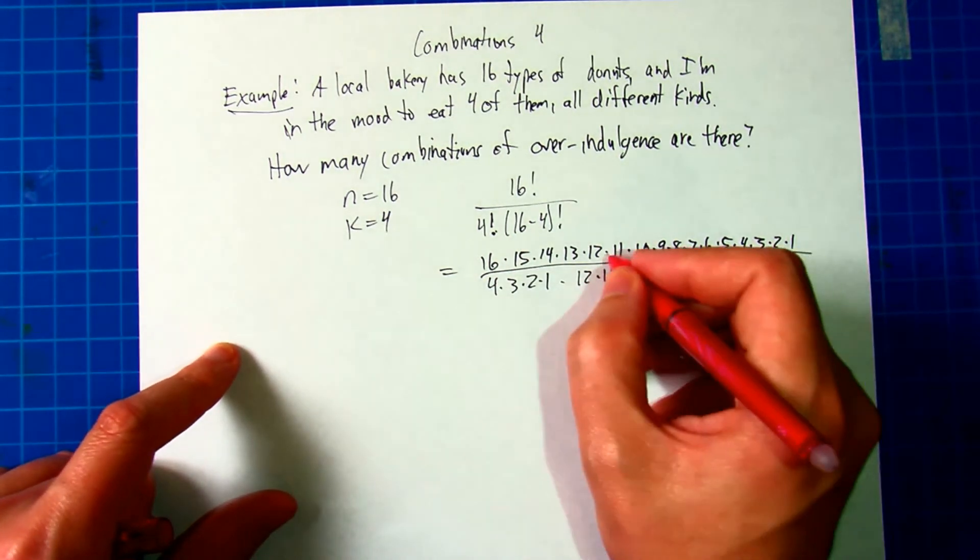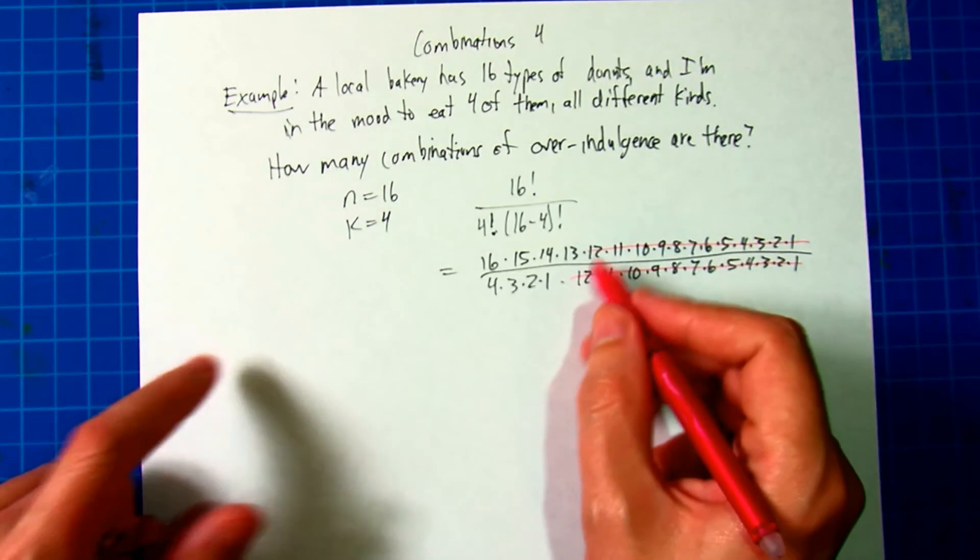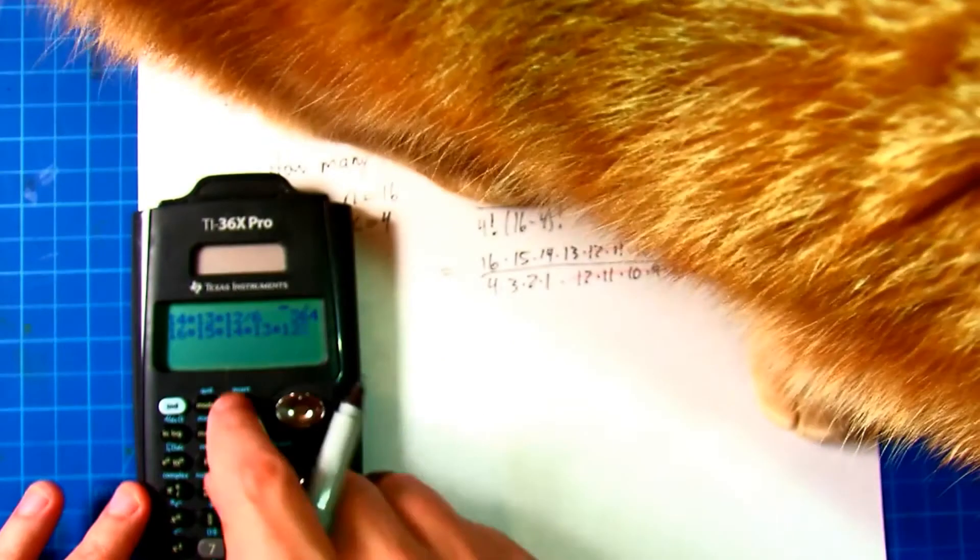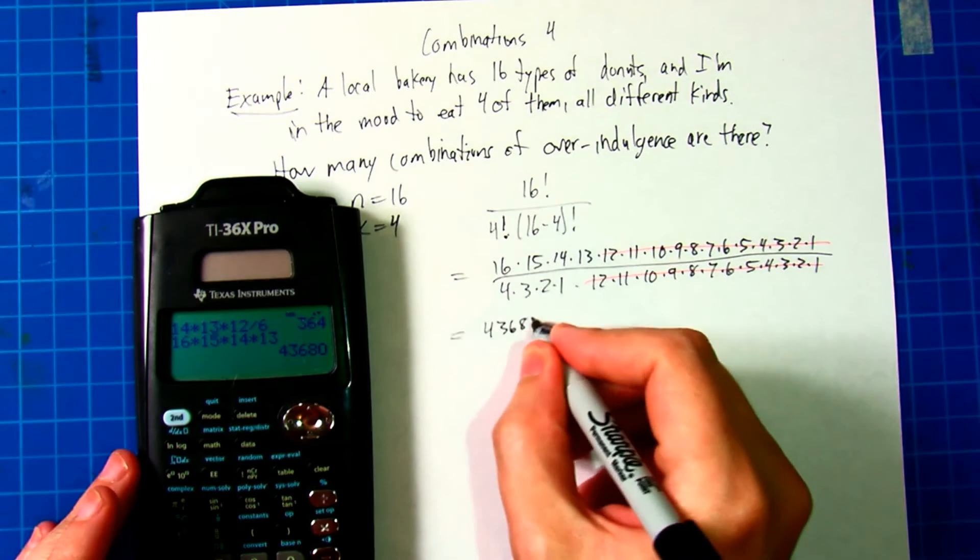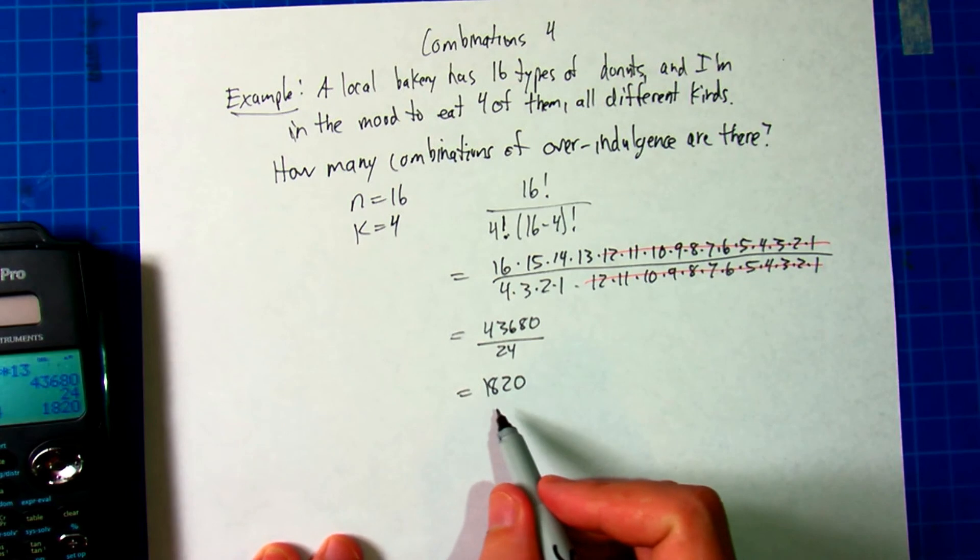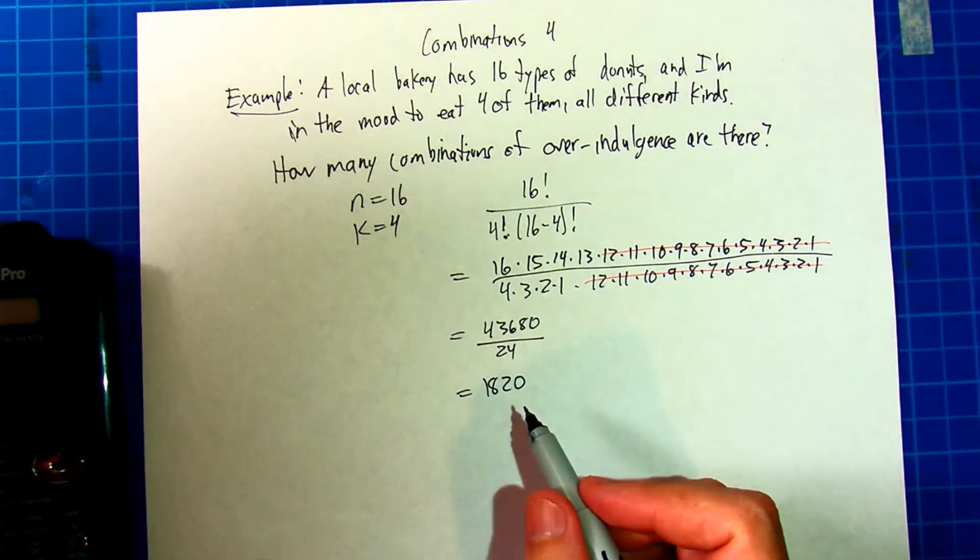These numbers get really big really fast, so writing it all out to cancel it makes this a lot easier to calculate. There are a total of 1,820 different purchases of four donuts I can get. And before my cat wanders back in the frame, let's just call it good.